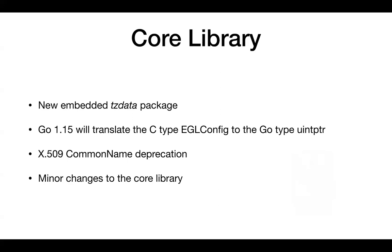Also, we have changes to the encoding/json package. Now it has an internal limit for nested depths. It is 10,000 — just keep that in mind. Also, we have a new method for the database/sql package called SetConnMaxIdleTime. It allows removing a connection from the connection pool after it has been idle for a period of time.